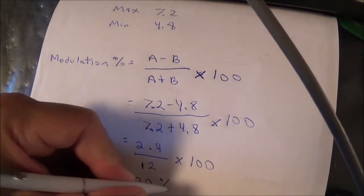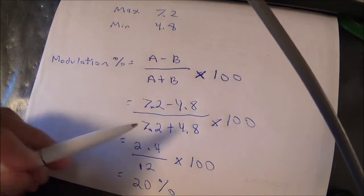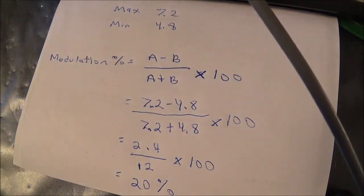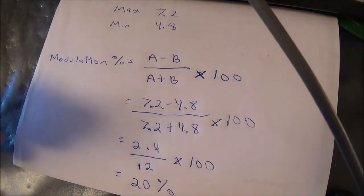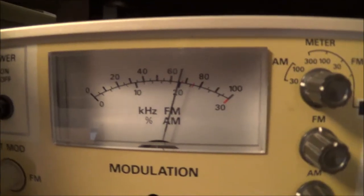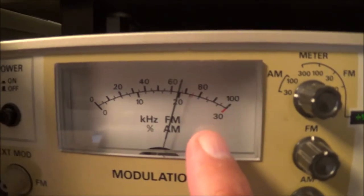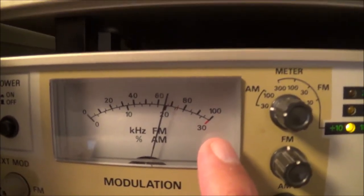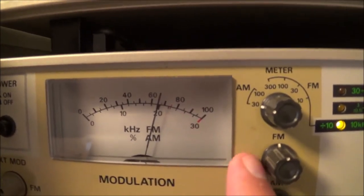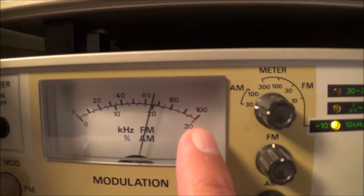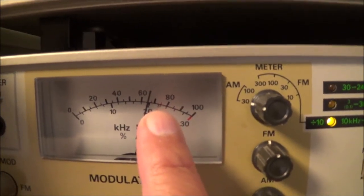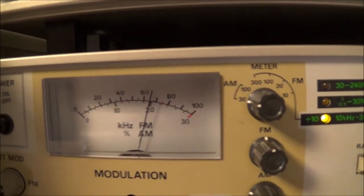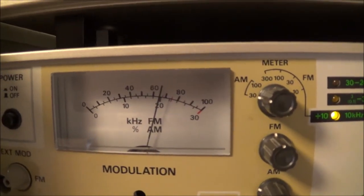Now we'll take a look at our indicator here on the Panasonic and see if I was correct. And here we can see the modulation level indicator. I did my math and it was 20%, and if we look here, I'm on a 30% scale, and the indicator's right on 20%. So I was actually pretty close.